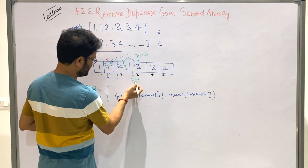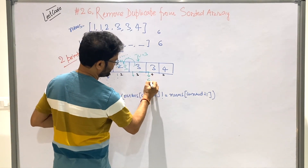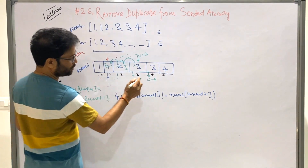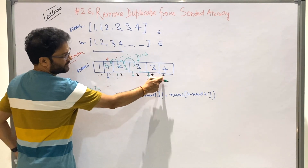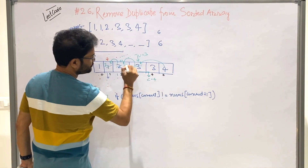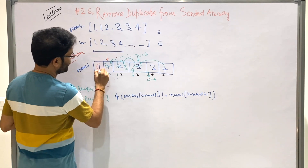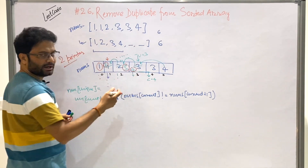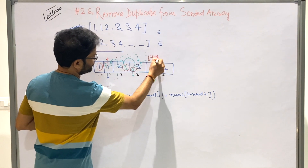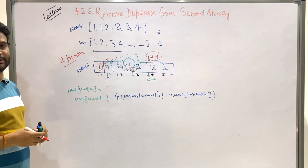Again check: are these two elements the same or not? They are the same - so do nothing and only increment current, not unique. Now current is 4. Check current and current plus 1 - they are different. So move nums[current + 1], which is 4, to the position of unique. After copying, increment unique. Now we have all unique items: 1, 2, 3, 4 in the array. The unique variable is equal to 4. We have 4 unique elements, and we don't care about what comes after the unique index.